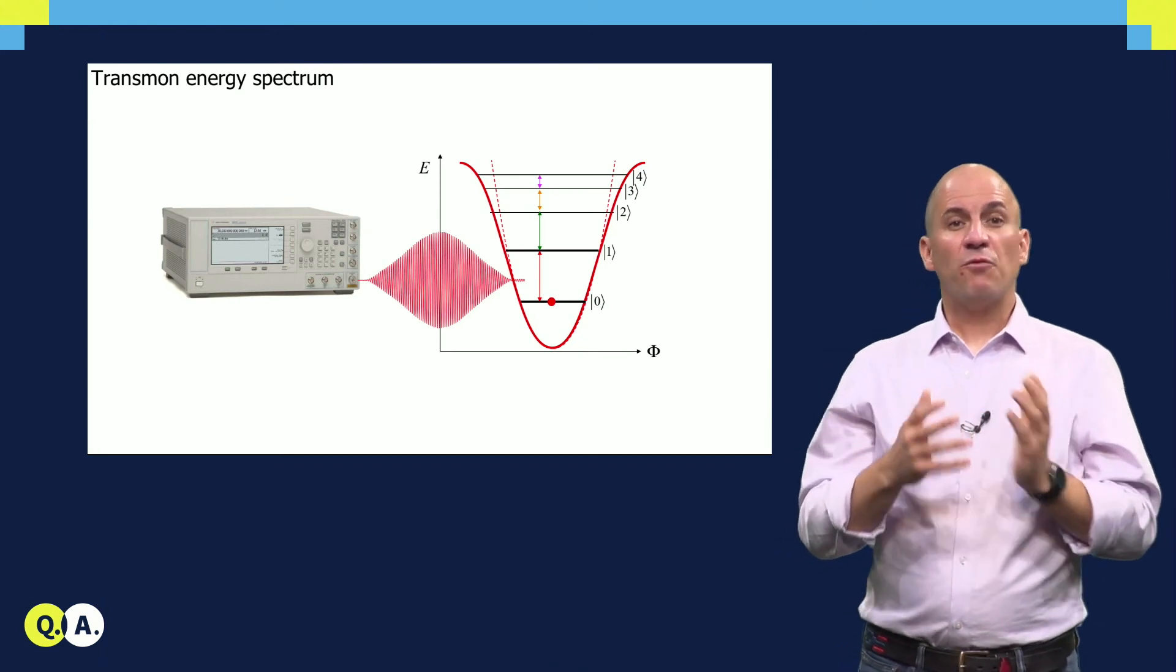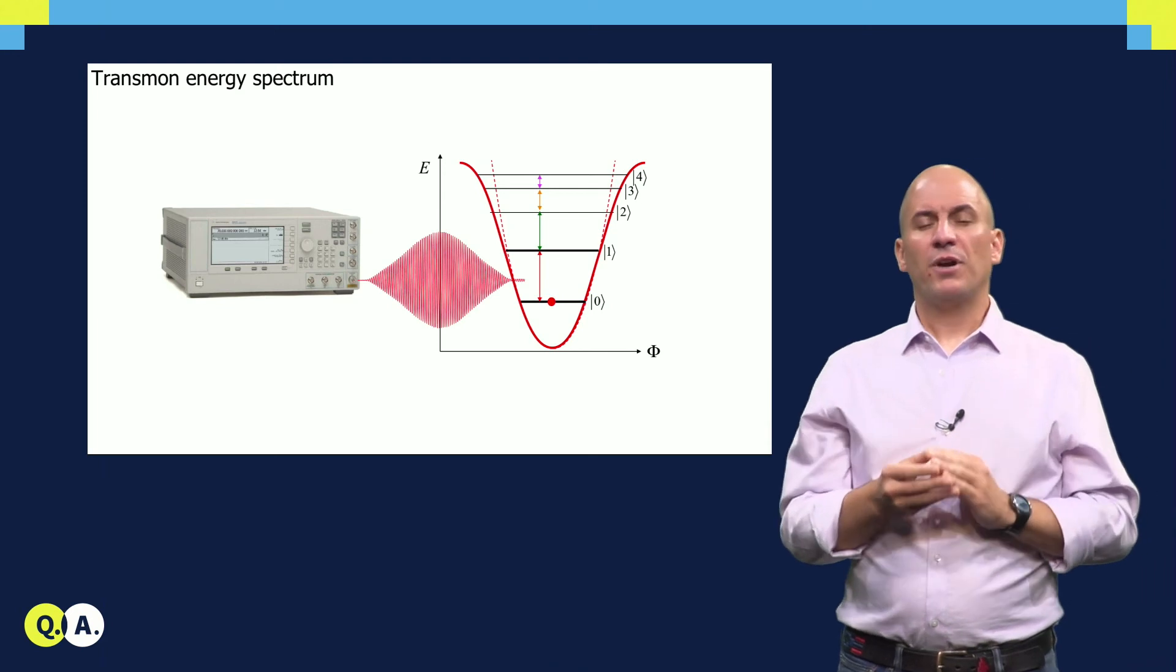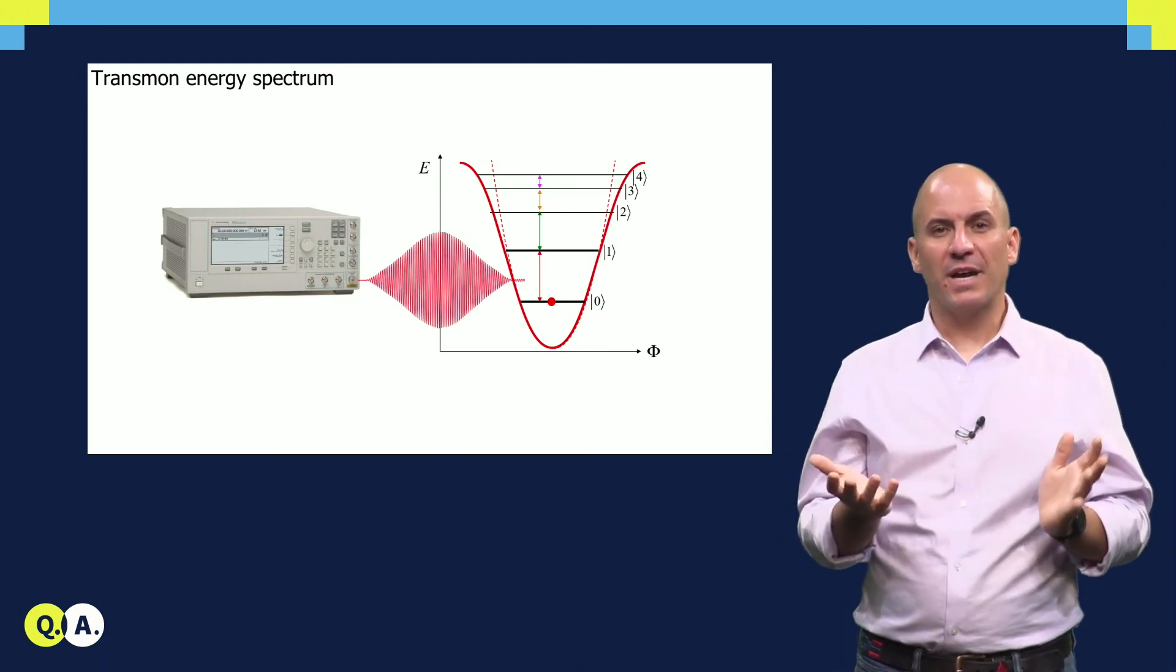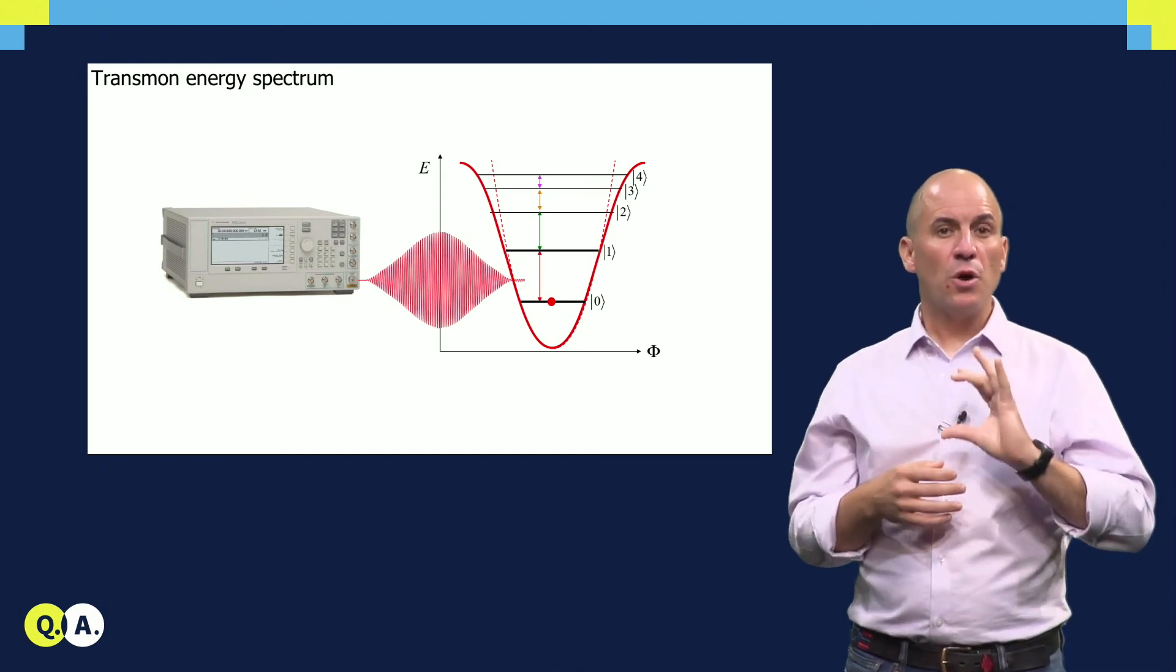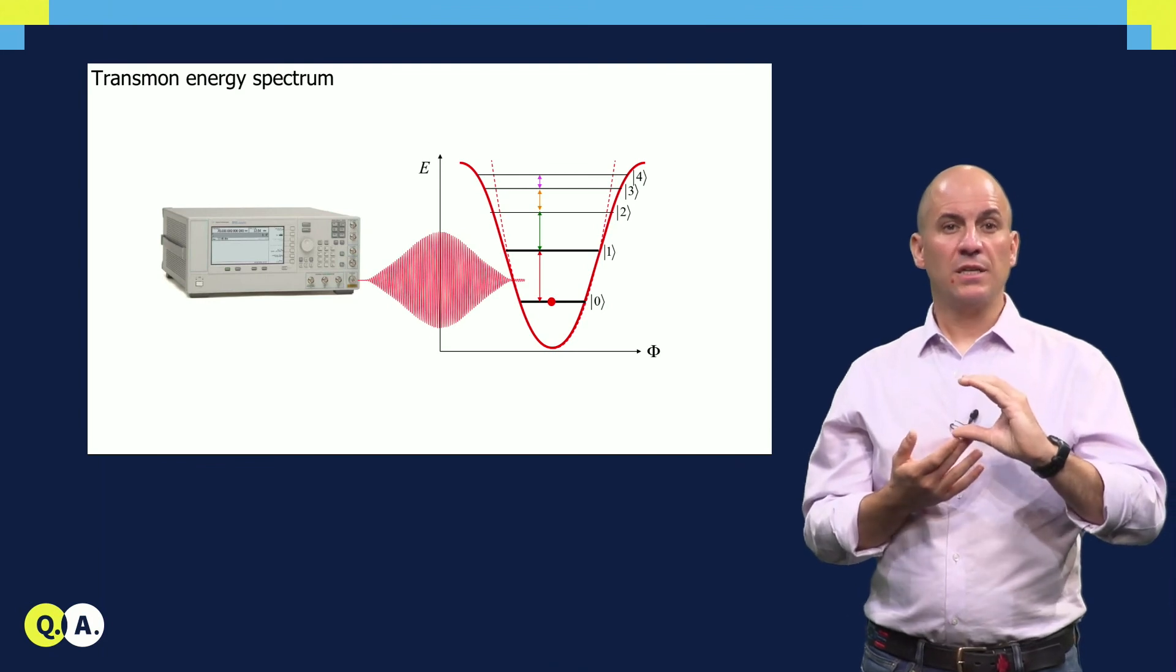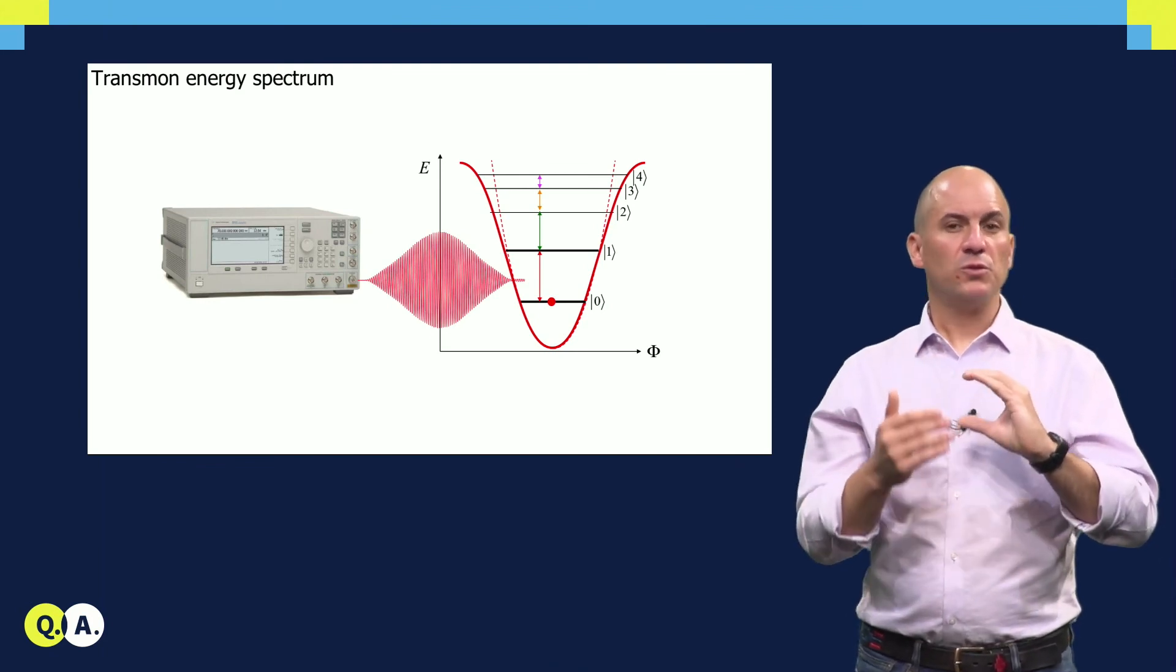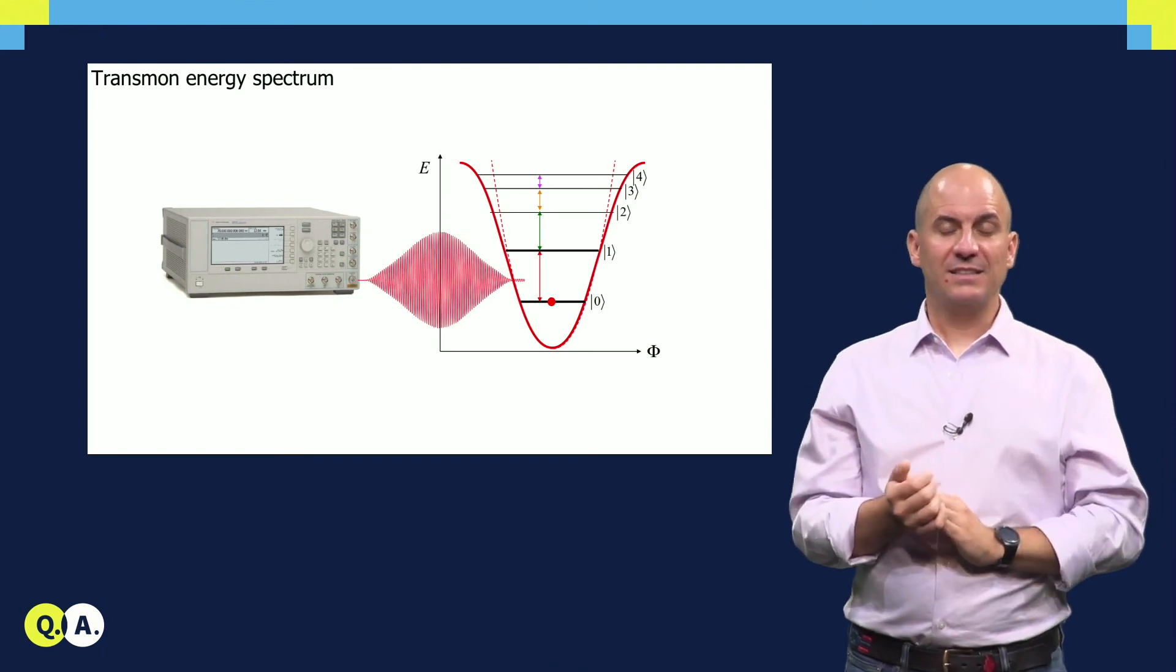This difference is sufficient in practice to confine the dynamics to the two lowest levels, our qubit subspace, when performing single qubit gates with pulses of duration about 20 ns. Brian will discuss the implementation of single qubit gates in detail.